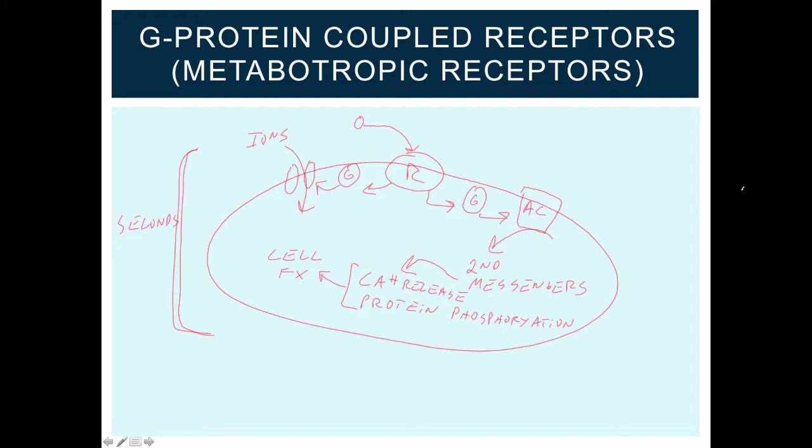One example of a G-protein coupled receptor is a muscarinic cholinergic receptor. And the ligand in this case would be acetylcholine. The same ligand we saw a moment ago for the ligand-gated ion channels. But in this case, the ligand is the same, but it's binding to a different type of receptor.